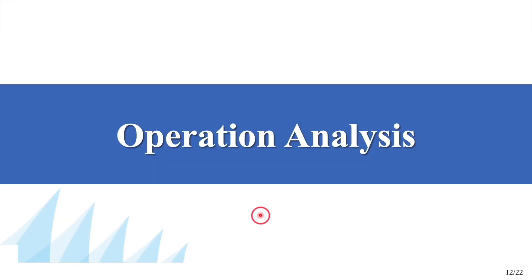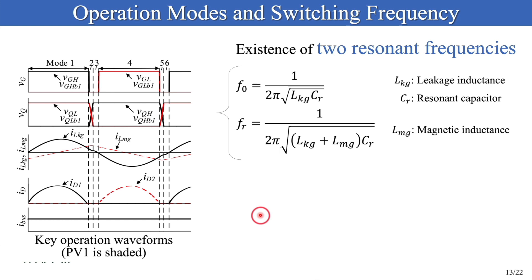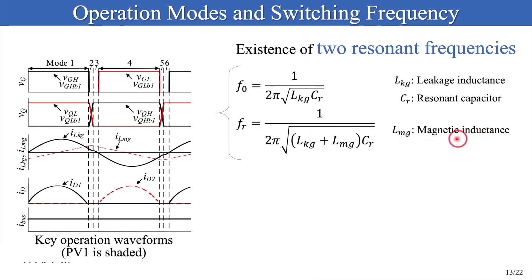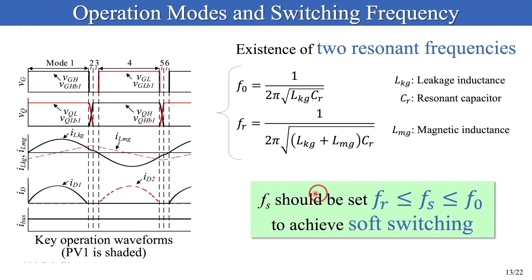Operation Analysis. Similar to ordinary LLC converters, there are two resonant frequencies in the proposed converter. The first resonant frequency, F0, is the resonance between the leakage inductance and the resonant capacitor. The second resonant frequency, FR, involves the magnetizing inductance in addition to leakage inductance and the resonant capacitor. The switching frequency FS should be set between these two resonant frequencies to achieve soft switching. Please note that capacitors other than the resonant capacitor should be large enough to avoid resonant operations.